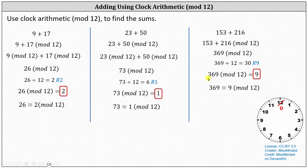To verify 369 mod 12 equals 9 on the clock, we begin with the hour hand pointing at 0. Because 369 divided by 12 equals 30 with a remainder of 9, we have 30 complete rotations around the clock for 360 hours, with the hour hand still pointing at 0. Then we move ahead 9 hours, leaving the hour hand pointing at 9, indicating it's 9 o'clock, or 369 mod 12 equals 9. I hope you found this helpful.